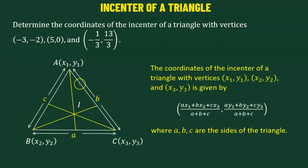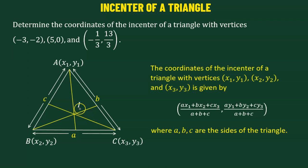Suppose we have a triangle ABC and the coordinates of the vertices are given as x1, y1; x2, y2; and x3, y3. We also specify the sides of the triangle by a, b, c in lowercase, where a is the side opposite to angle A, b is the side opposite to angle B, and c is the side opposite to angle C. The three angle bisectors meet at a common point, which is defined as the incenter of the triangle. To define its coordinates, we need two pieces of information: the coordinates of the vertices, and the lengths of the sides of the triangle.